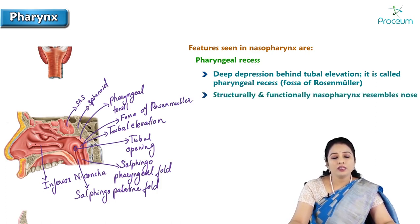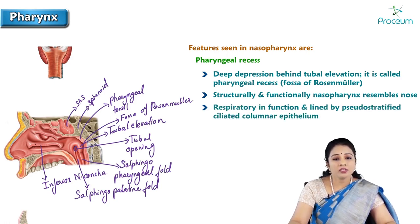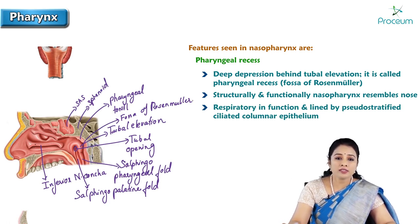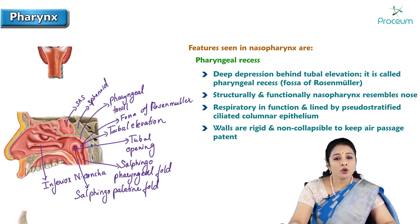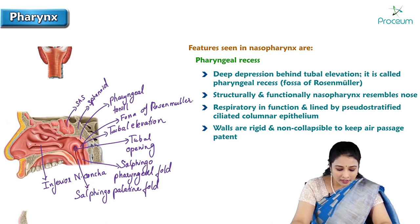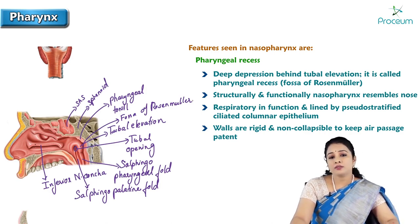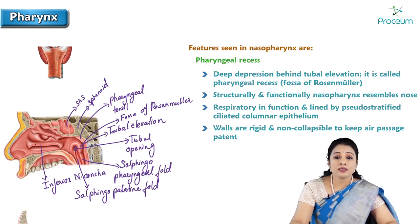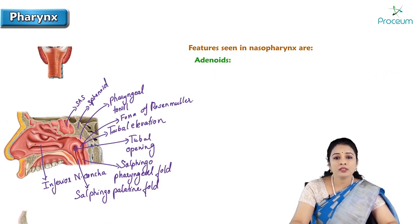Structurally and functionally the nasopharynx resembles the nose and is respiratory in function, lined by respiratory epithelium — that is, pseudostratified ciliated columnar epithelium. Its walls are rigid and non-collapsible to keep the air passage patent.